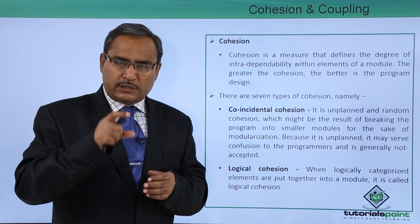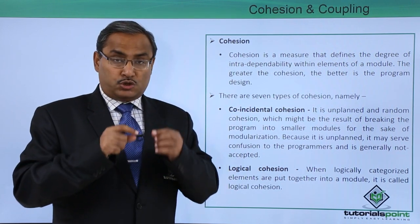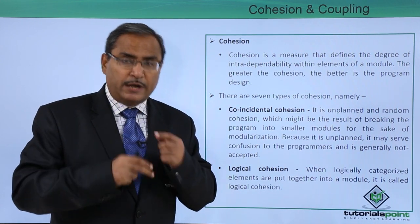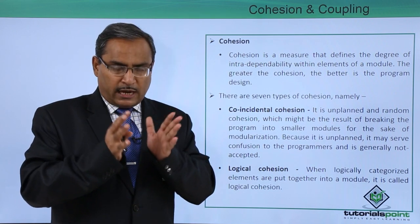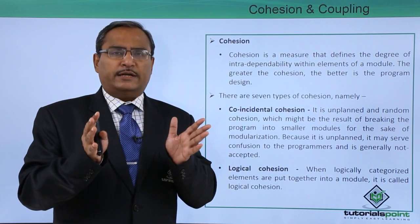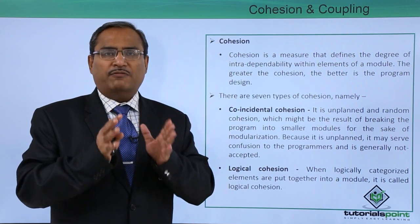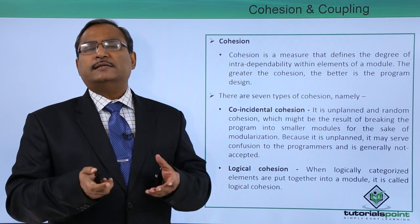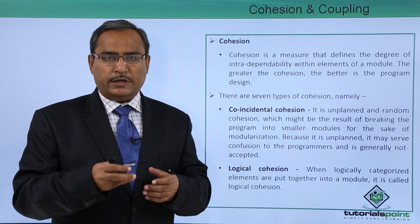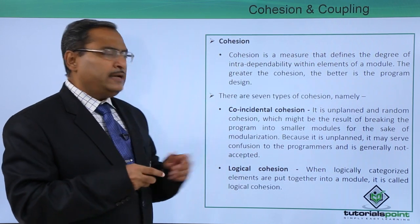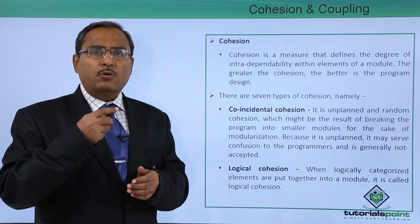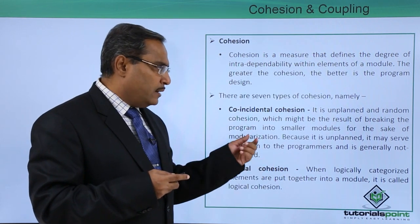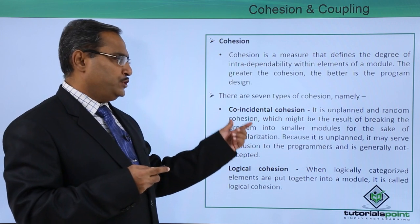A module consists of multiple instructions, and cohesion measures how much interdependability exists among those instructions — whether they are very cohesive or unrelated. When a module has high cohesion, it indicates that the software design quality is good. The first type is coincidental cohesion: it is unplanned and random cohesion which might be the result of breaking programs into smaller modules purely for the sake of modularization.